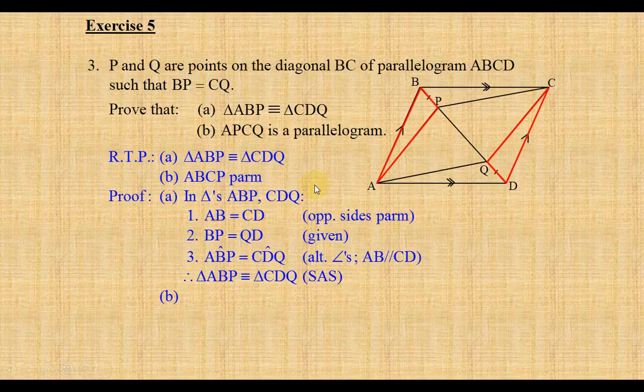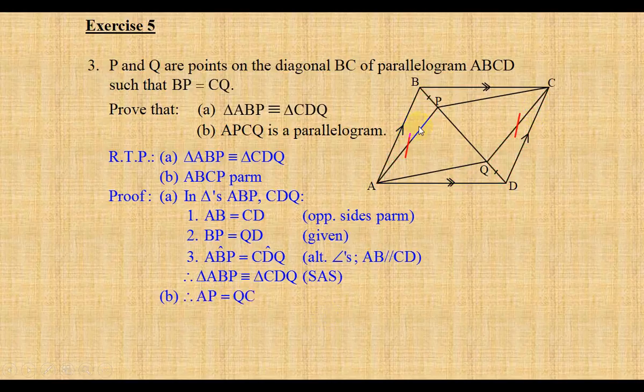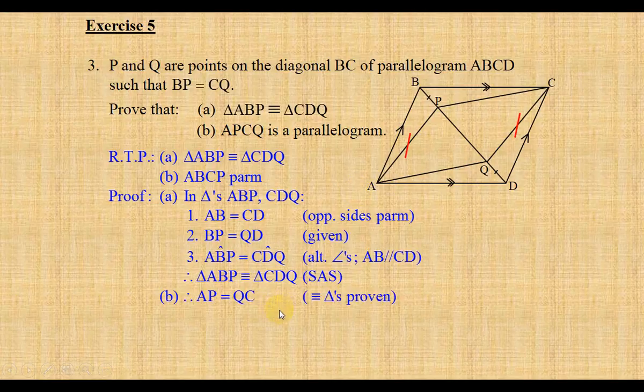The second part of the proof wants us to prove that APCQ is a parallelogram. Remember, we just proved that the two triangles are congruent. Therefore, AP and QC are equal, and our reason is congruent triangles.